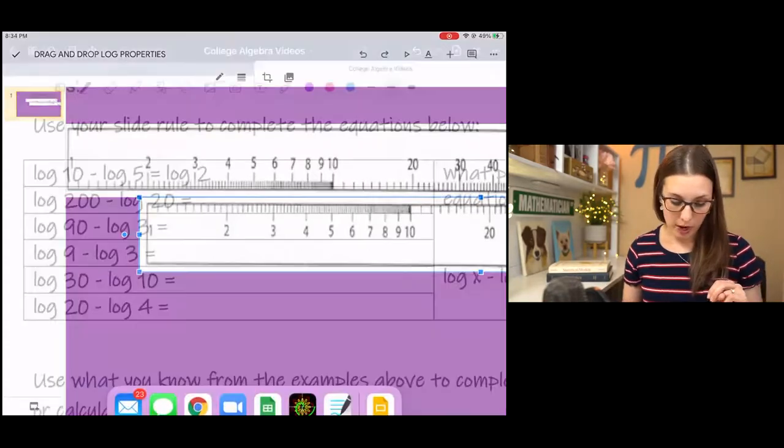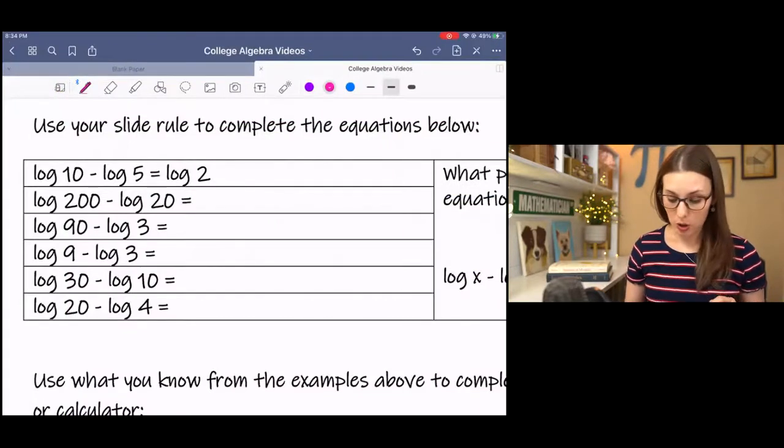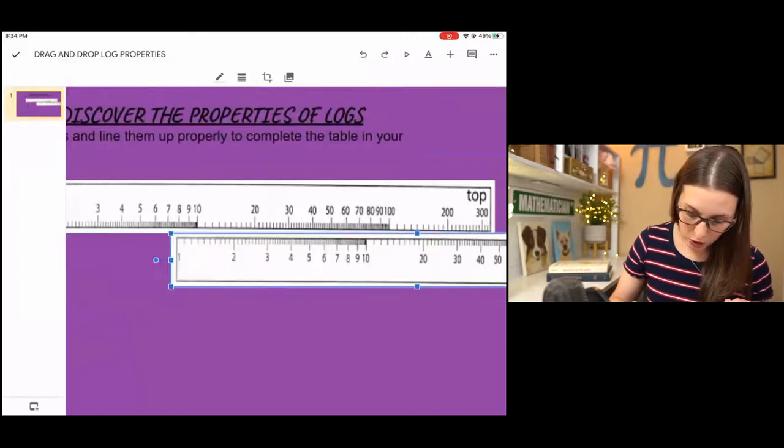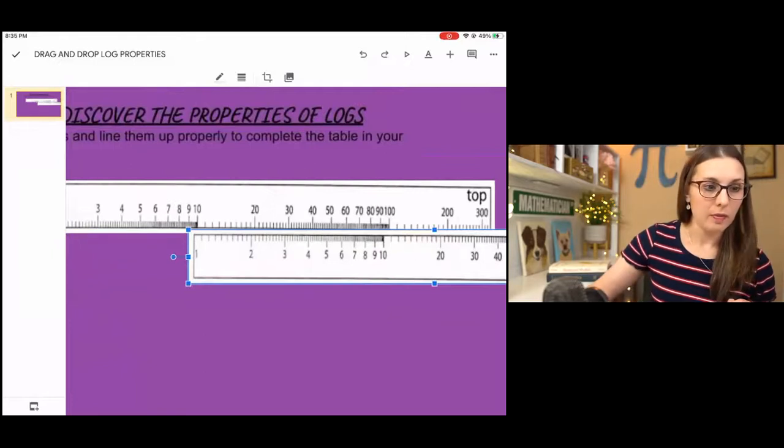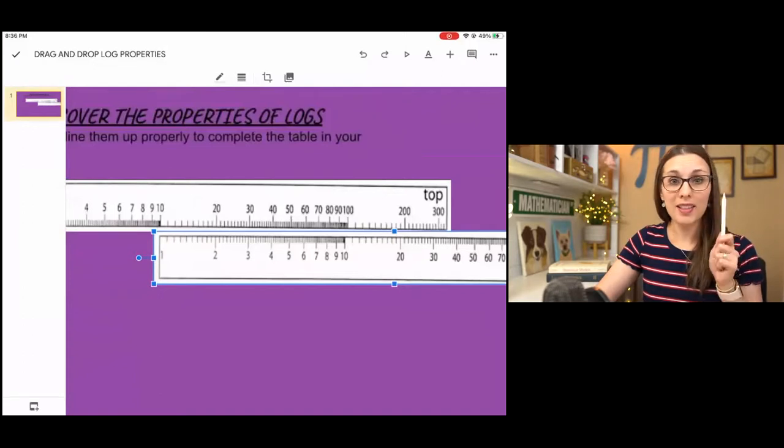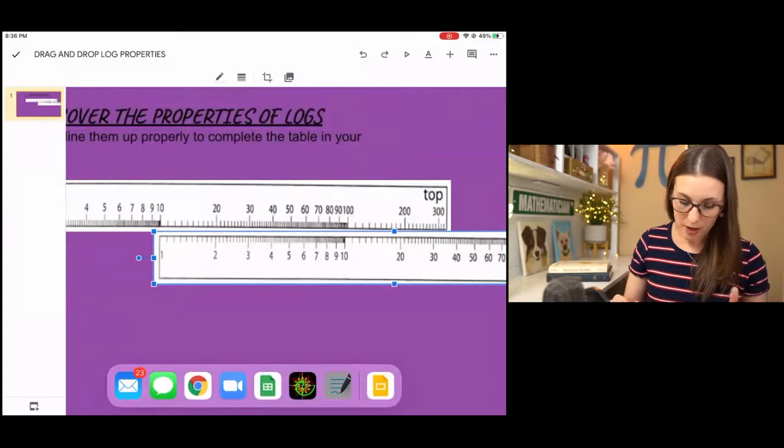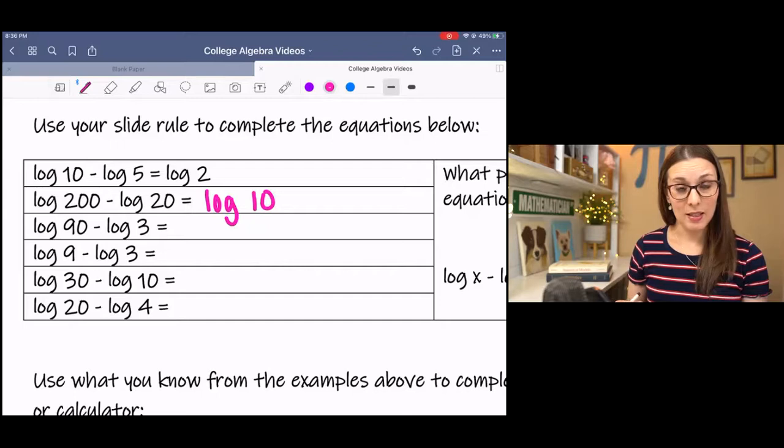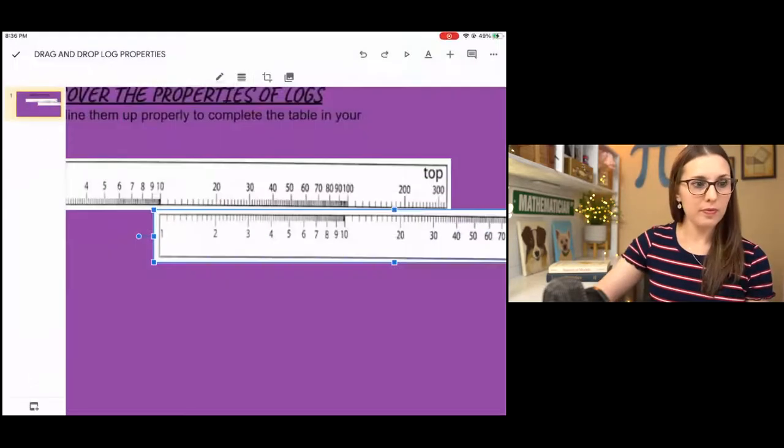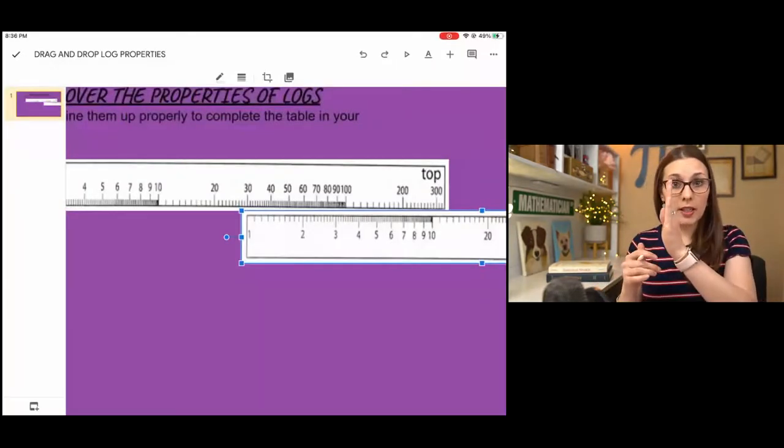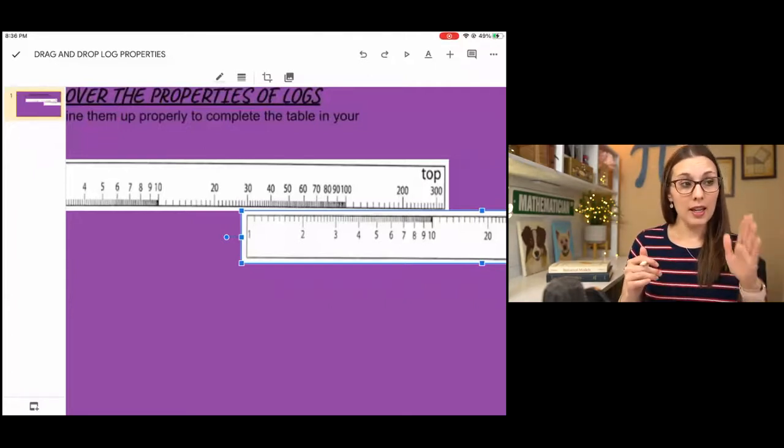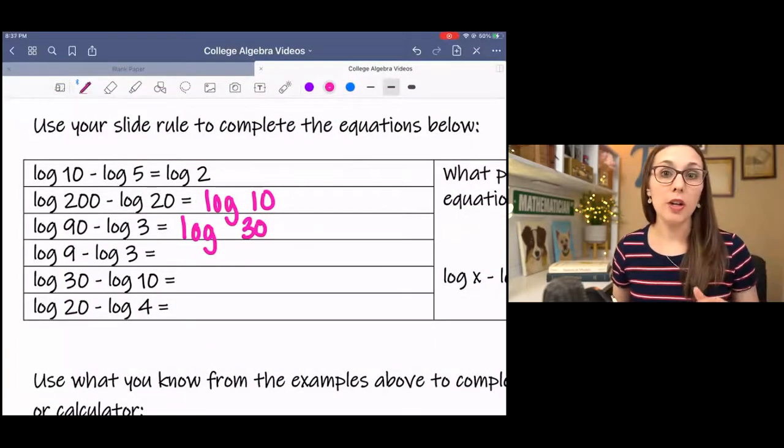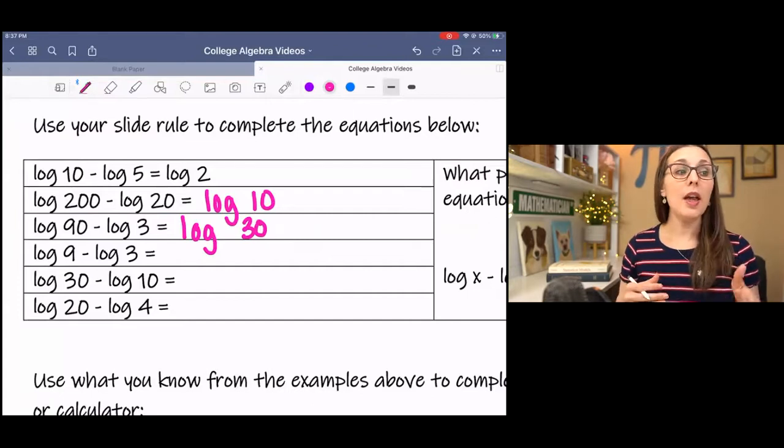In the next example, we have log 200 minus log 20. We're going to start at 200 and go back 20. The end of my bottom ruler is lined up at 10, so log 200 minus log 20 is log 10. Now log 90 minus log 3. When I start at 90 and I line up the 3 under it, it ends up at 30. So you might be able to see a pattern emerging. If you can, pause the video and try to see if you can make a hypothesis about what's happening and fill in the rest of the table.